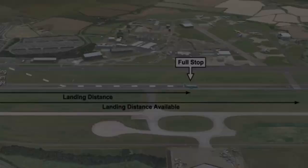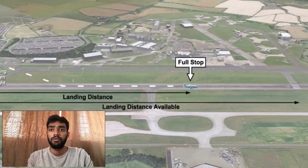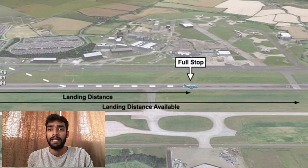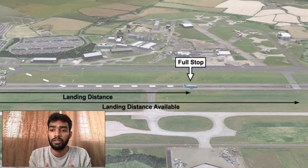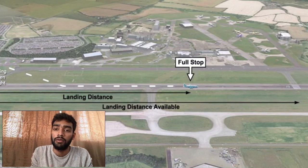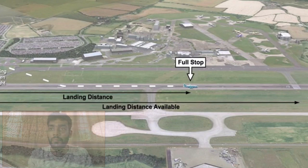Aircraft landing distance starts from 50 feet above the threshold to where the aircraft fully stops on the runway. In other words, the landing distance should not exceed the landing distance available — meaning the aircraft should be able to land within the runway.